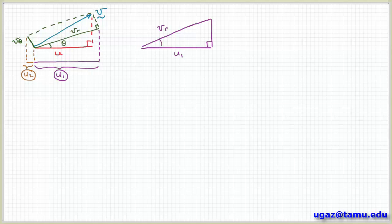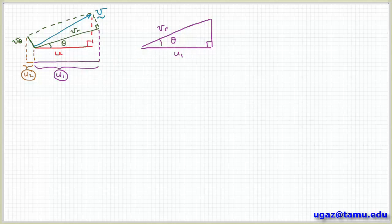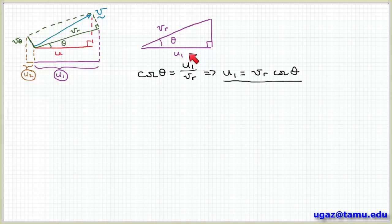I want to express u in terms of vr and vtheta, so I need to find the projections of vr and vtheta onto u. Looking at u1 first: I draw this triangle where u1 is the projection of vr on u. This is a right triangle and the angle between them is theta. From trigonometry, cosine theta equals adjacent over hypotenuse, so that's u1 over vr. Therefore, u1 equals vr cosine theta.